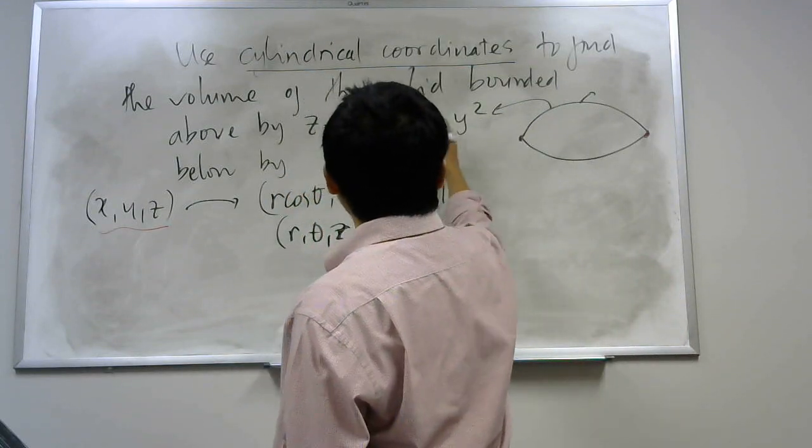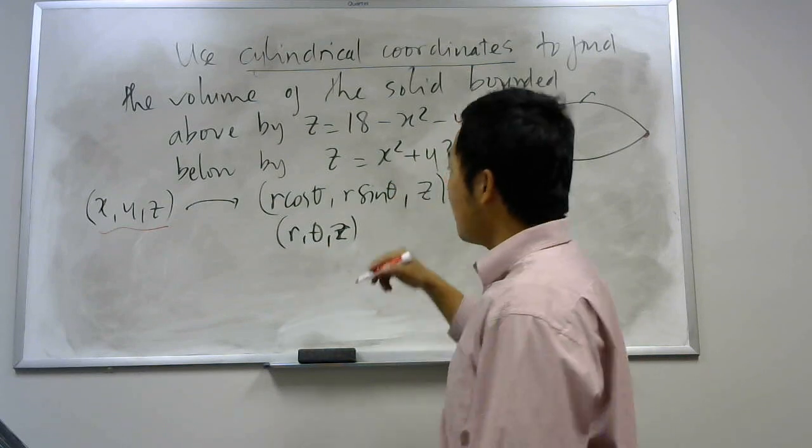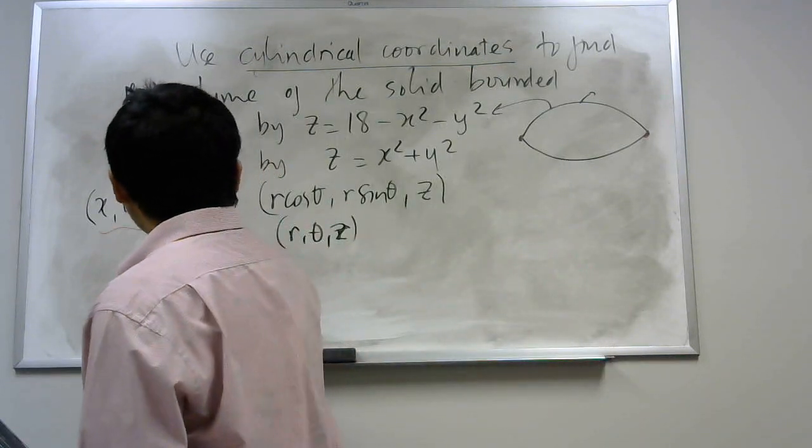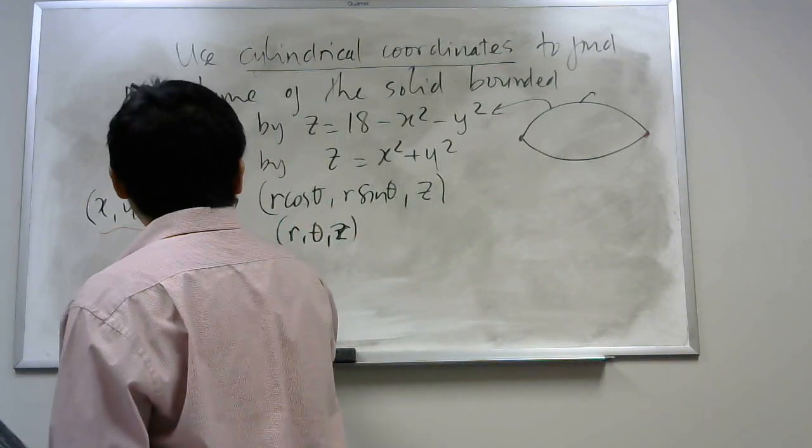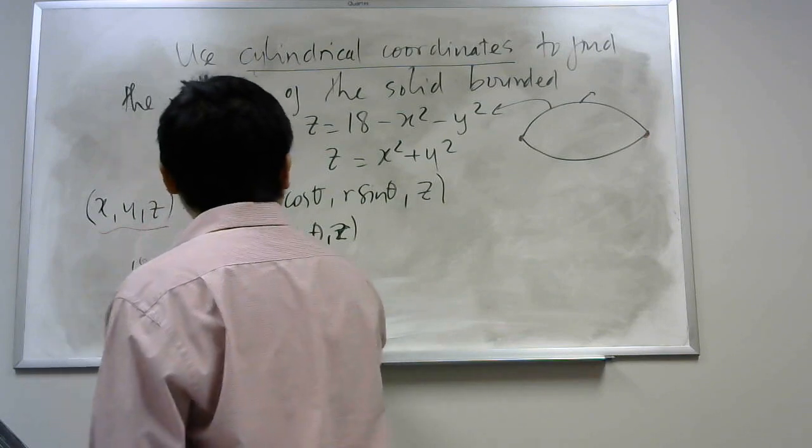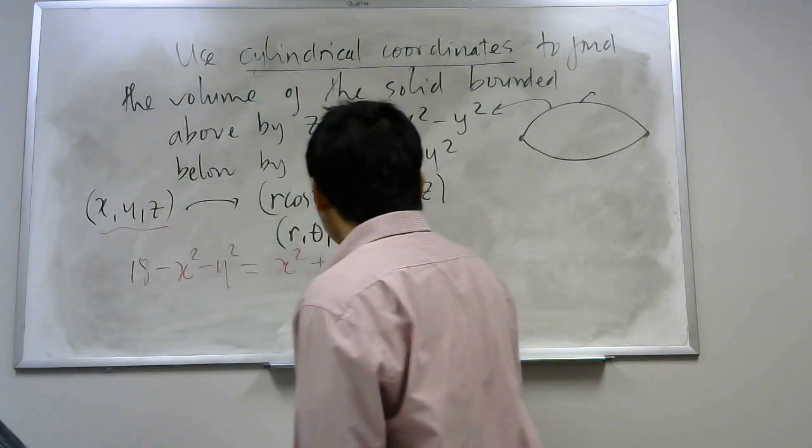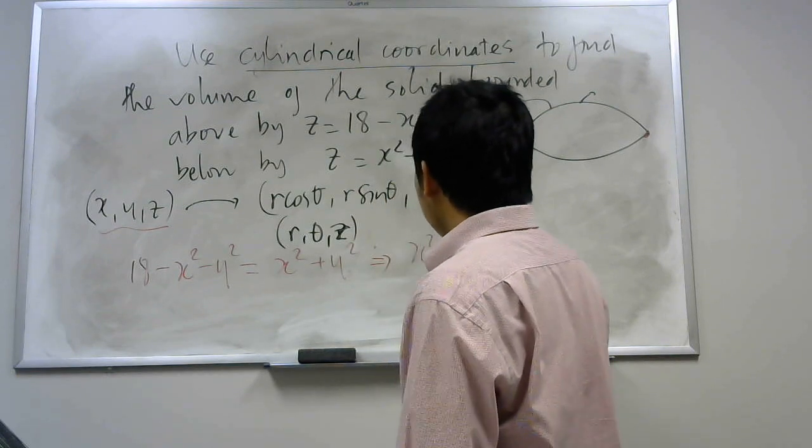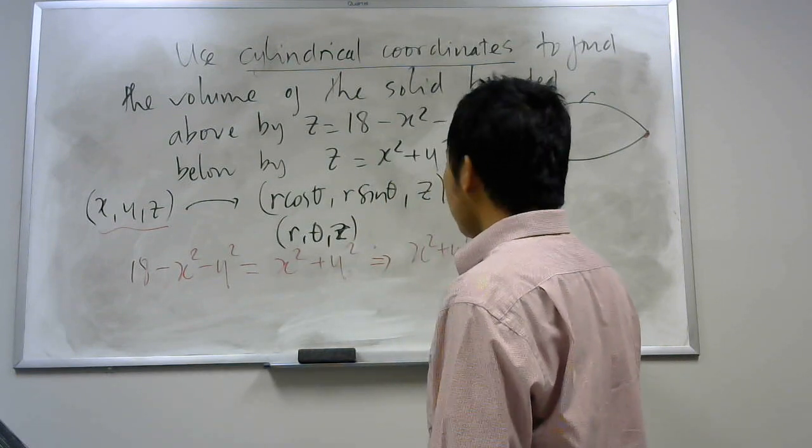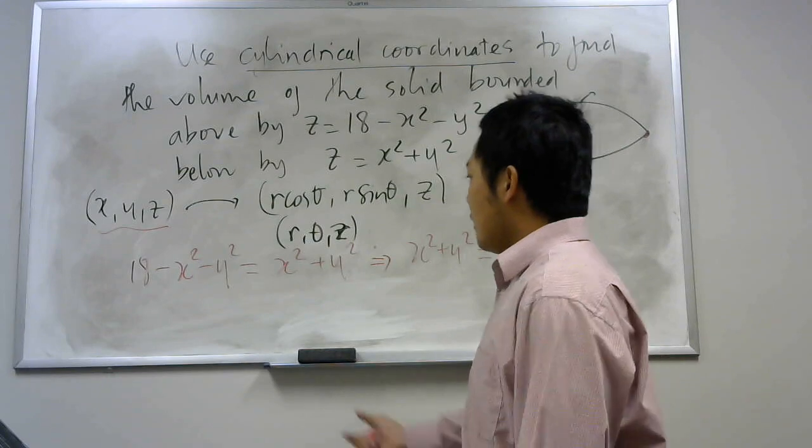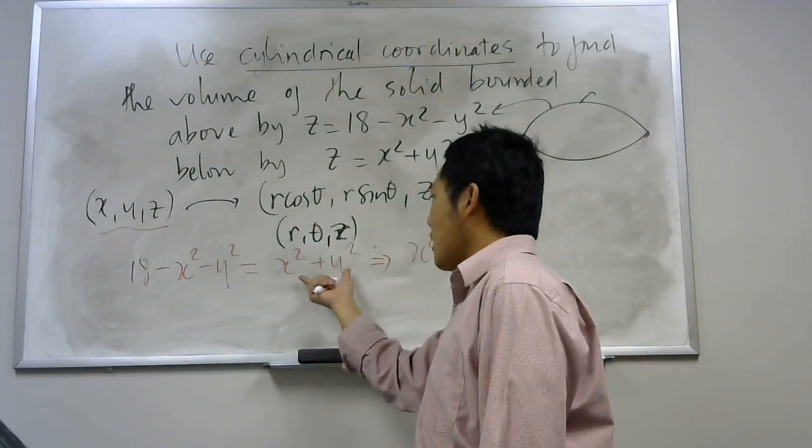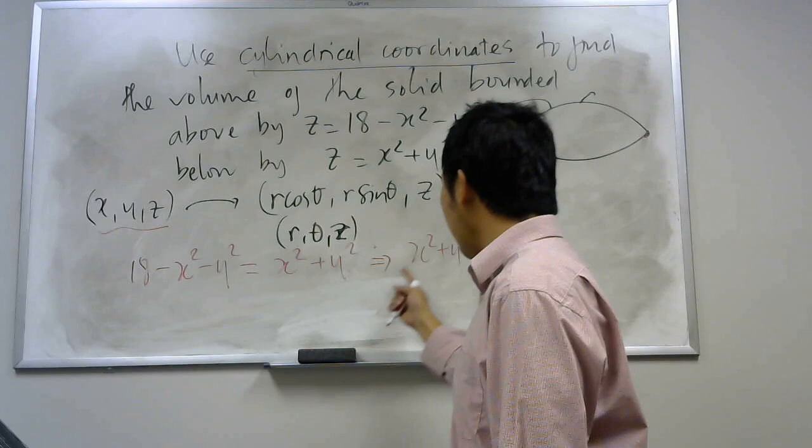It means 18 minus x squared minus y squared equal to x squared plus y squared. So I have 18 - x² - y² = x² + y². And then, from here, I get x² + y² = 9. So you bring this part to another side, you get 2x² + 2y². You simplify by 2, you get 9.